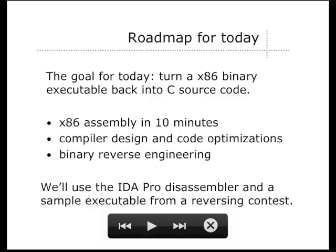The goal for this class is to do a very brief introduction to reverse engineering — to show you what it looks like. We're going to take a very simple program written in C, compiled as an executable on Windows, and figure out what it does and recreate its source code. Not completely, because you can't really do this in a single hour, but I will show you the steps, and if you're interested you can take this home and do a bit more work to get the full source code.